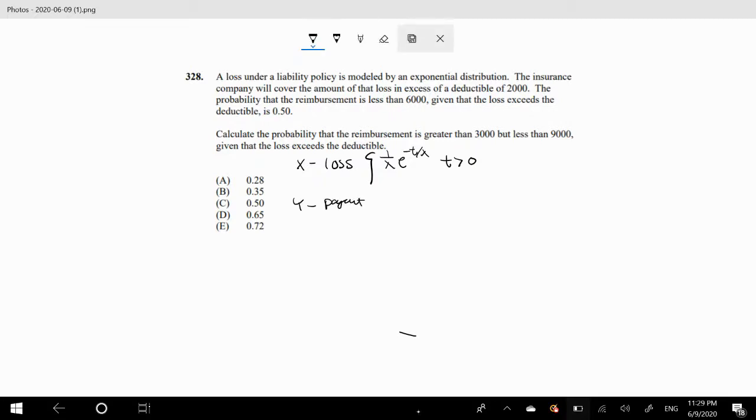We have a deductible of $2,000. So anything less than our deductible, the payout is zero, and anything greater than our deductible is going to be X minus the deductible. You'll notice that they give you some information here.